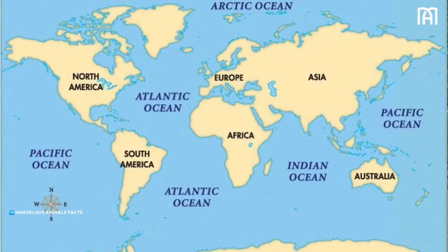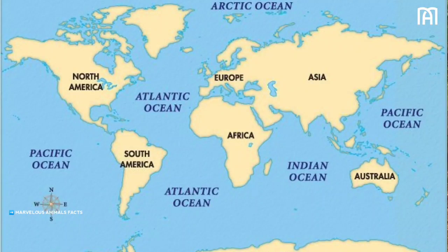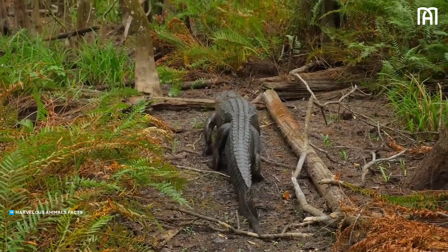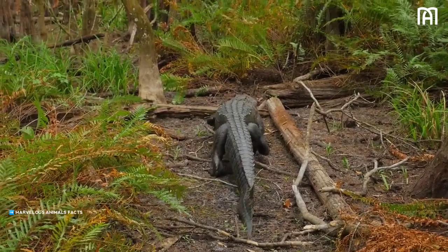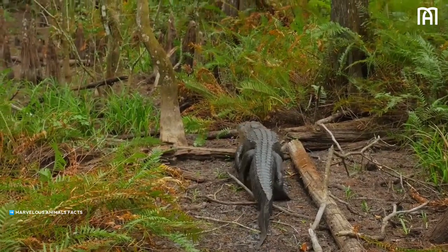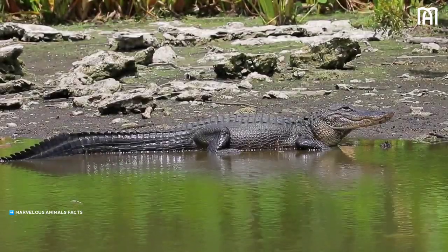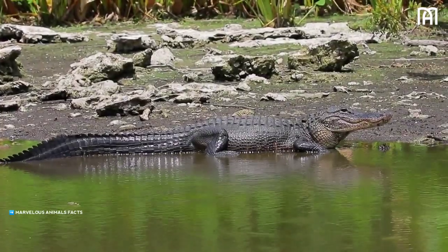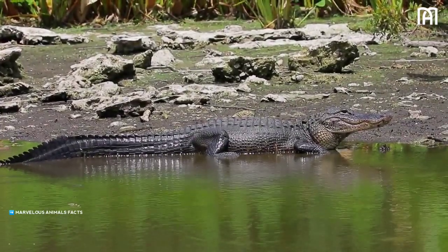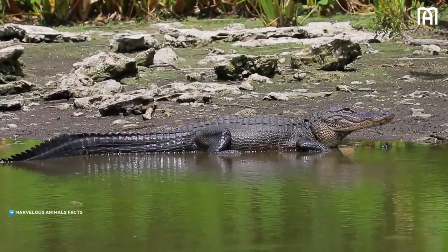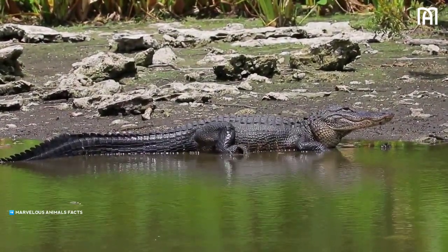Alligators are found in North America and South America, while crocodiles are found in Africa, Asia, and Australia. The modern alligator, Alligator mississippiensis, evolved about 3.5 million years ago, and is the only species of alligator native to the United States.